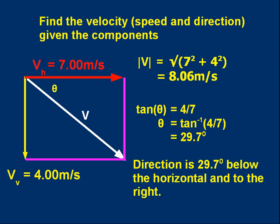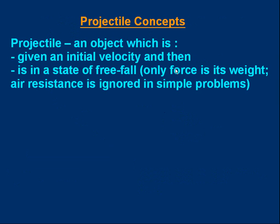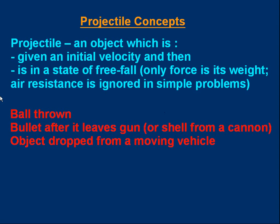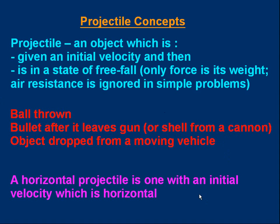That covers what you should already know as background information. Let's talk about projectiles. A projectile is an object which is given some initial velocity — maybe you throw it or it's fired out of a gun — and then it's in a state of free fall with only gravity acting on it. We usually ignore the effects of air resistance for simple calculations. Examples are a ball or stone if you throw one, a bullet after it leaves a gun, a shell from a cannon, or an object dropped from a moving vehicle. A horizontal projectile is one with an initial velocity which is horizontal.